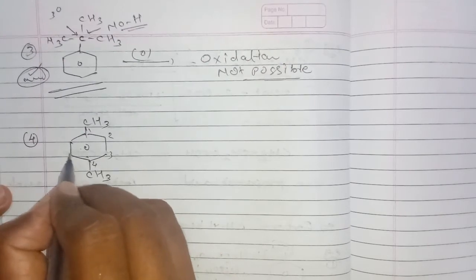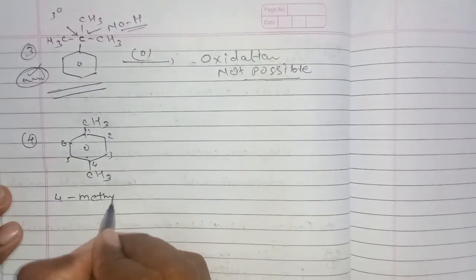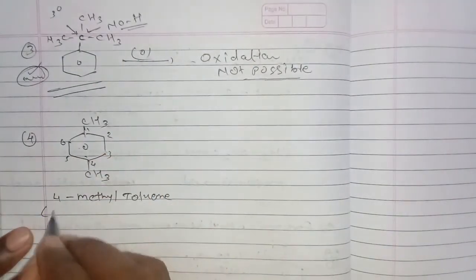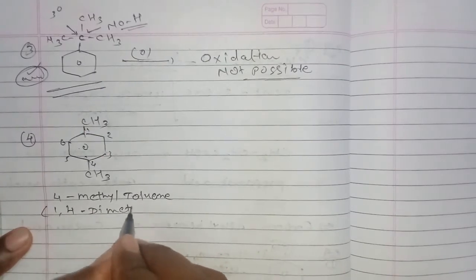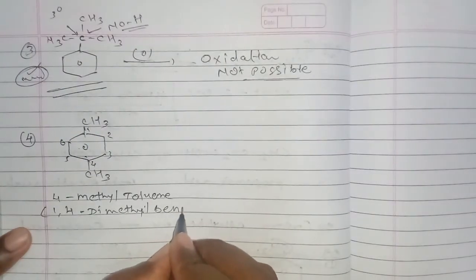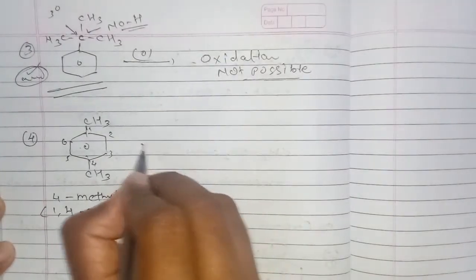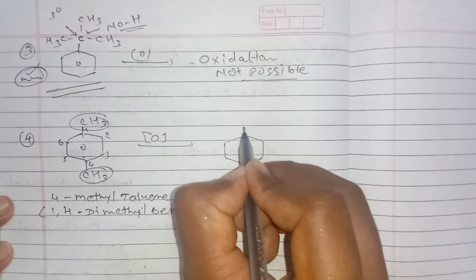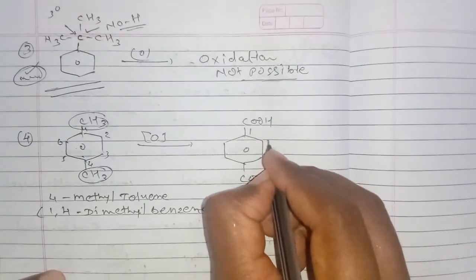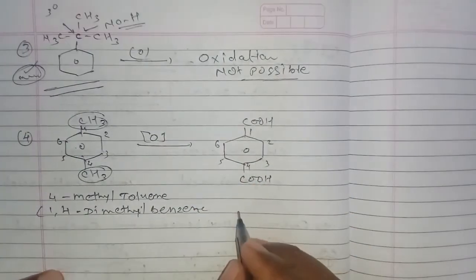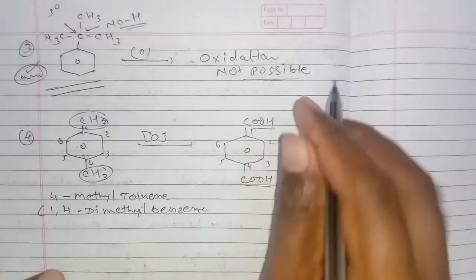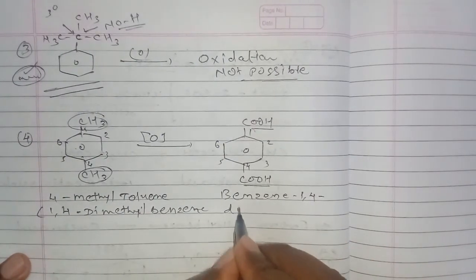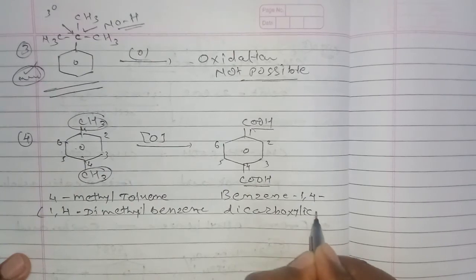The fourth reaction: a benzene ring with methyl groups at positions one and four — its name is 1,4-dimethylbenzene (or p-xylene / 4-methyltoluene). When oxidized, both methyl groups are converted to COOH groups. The product has carboxylic acid groups at positions one and four on the benzene ring, and its name is benzene-1,4-dicarboxylic acid (terephthalic acid).